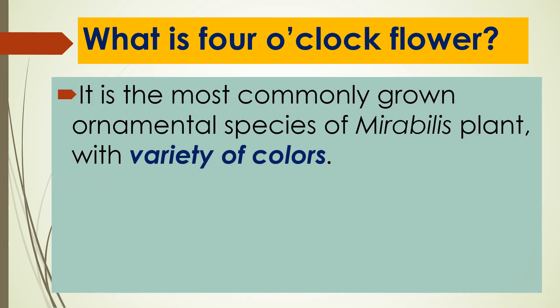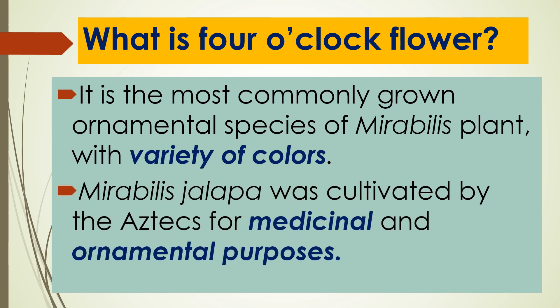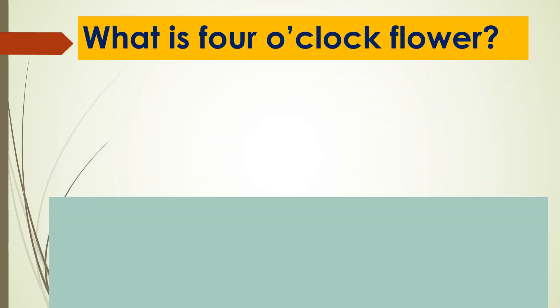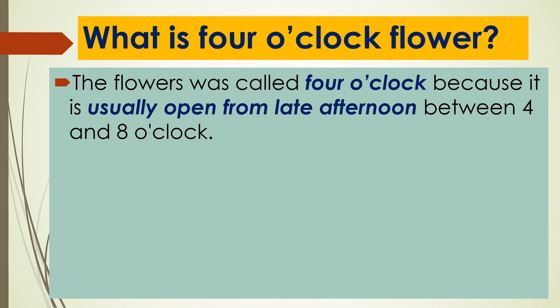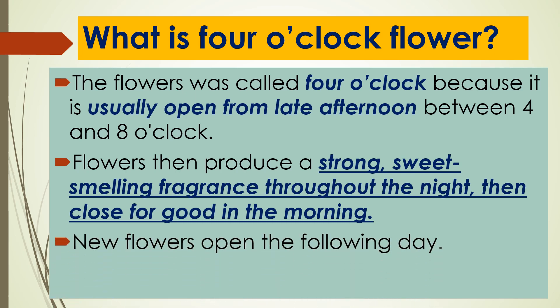It is the most commonly grown ornamental species of Mirabilis plant, with a variety of colors. Mirabilis jalapa was cultivated by the Aztecs for medicinal and ornamental purposes. The flowers are called 4 o'clock because they usually open from late afternoon between 4 and 8 o'clock, producing a strong, sweet-smelling fragrance throughout the night, then close for good in the morning. New flowers open the following day.